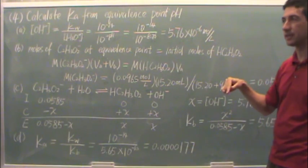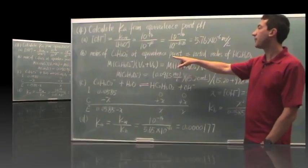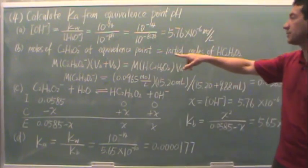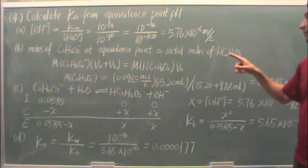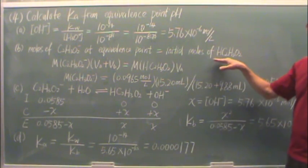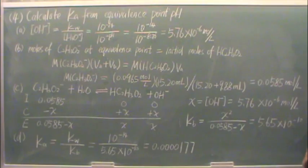You're going to see we're going to use it in a moment in ICE. For part B, we're going to find the moles of the acetate ion at the equivalence point. That's going to equal the initial moles of the acetic acid.